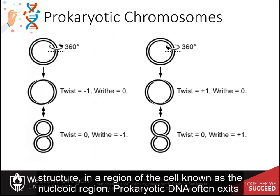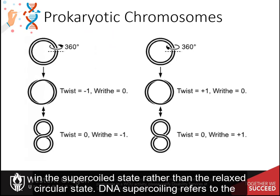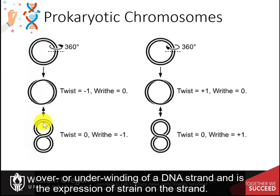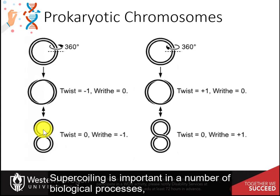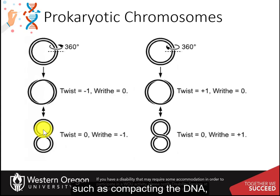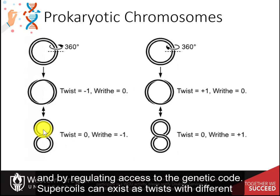Prokaryotic DNA often exists in a supercoiled state rather than the relaxed circular state. DNA supercoiling refers to the over or underwinding of a DNA strand and is the expression of strain on the strand. Supercoiling is important in a number of biological processes, such as compacting the DNA and by regulating access to the genetic code.